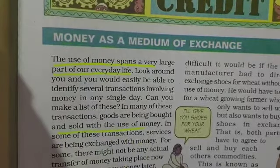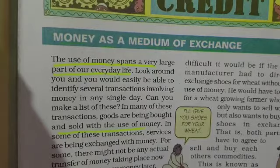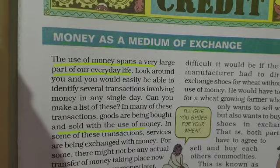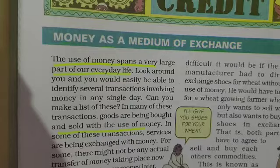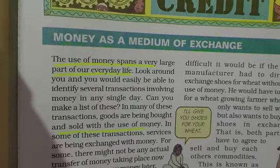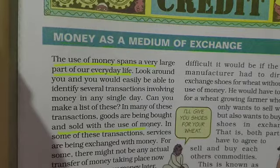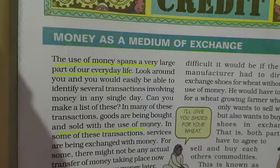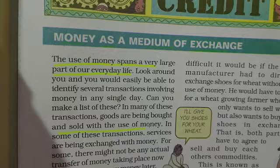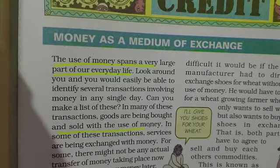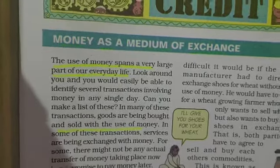In some transactions, services are also being exchanged with money. For example, if you are going to a bank, you are depositing or withdrawing money — directly or indirectly, a service is being given. Similarly, buying a gas cylinder involves paying the vendor, or paying for doctor services. For some transactions, there might not be any actual transfer of money taking place — there is a promise to pay money later, which we can call credit.